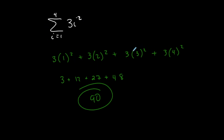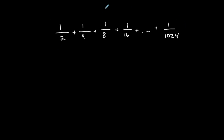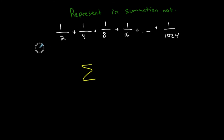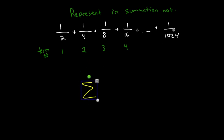Converting from summation notation to expanded form is a little easier than going the other direction. Now I want to represent a given sum in summation notation. To help find the formula, I like to write the term number underneath each term — first term, second term, third term, fourth term — and I'm not sure which term number the last one is yet. Once I find my formula, that'll help me determine what term number that is.